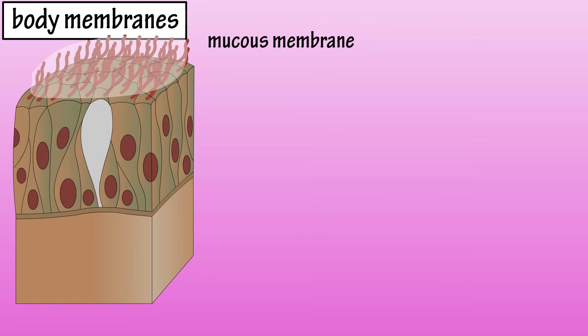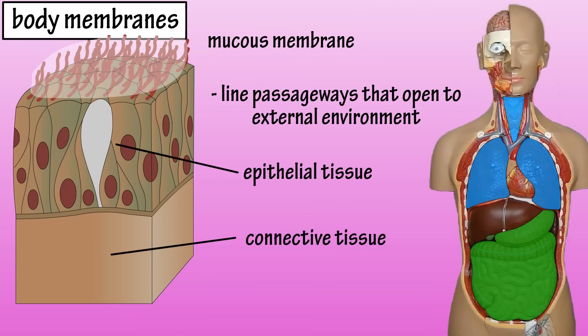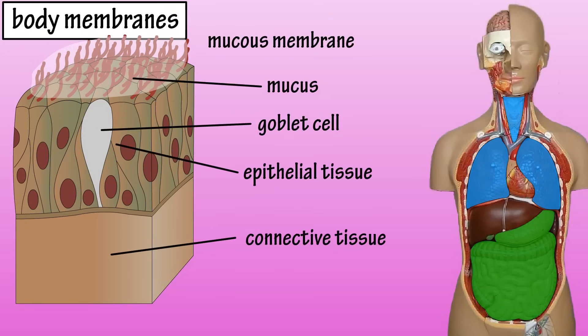Mucous membranes line many passageways that open up to the external environment. Mucous membranes are also composed of epithelial and connective tissue. In many areas of the body, these membranes are covered with a mucus secreted by goblet cells that are part of the epithelial layer. Mucous membranes line the digestive tract, respiratory tract, urinary, and reproductive tracts.